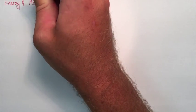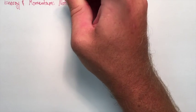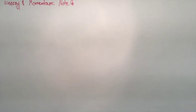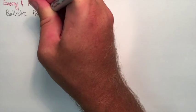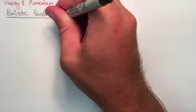Grade 12 Physics, Energy and Momentum Note Number 8, Ballistic Pendulum. A ballistic pendulum is a classic example where we need to use both conservation of energy and conservation of momentum to find the final answer.